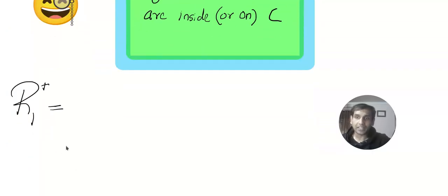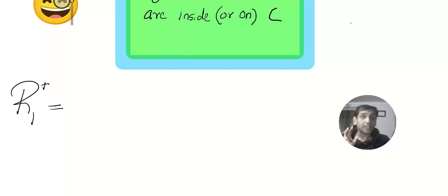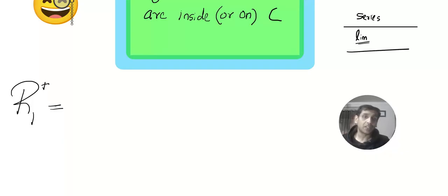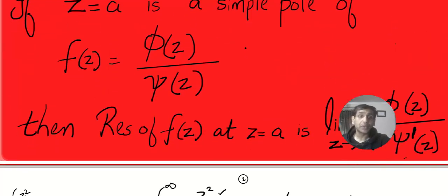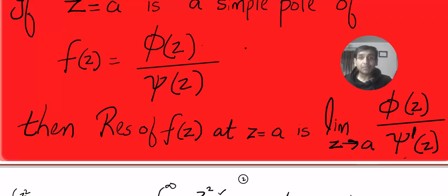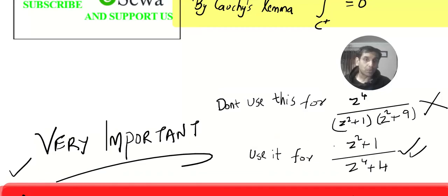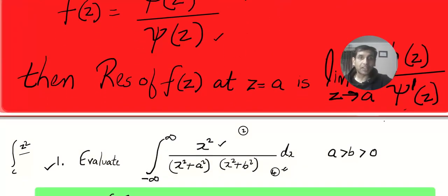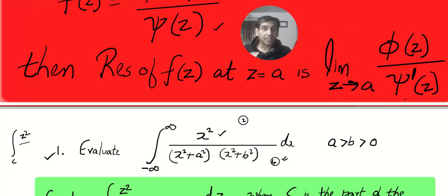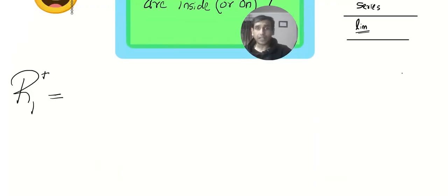There are three methods to calculate the residue: method 1 is the series method; method 2 is the limit method, which we'll apply now; method 3 is valid only for polynomial divided by polynomial (not a product of polynomials) — in that case the residue equals the numerator divided by the derivative of the denominator.